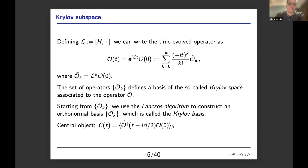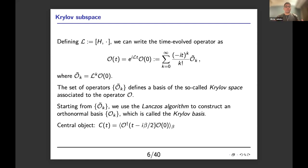In more abstract terms: first you define the Liouvillian operator L, and then write the time-evolved operator formally. Expanding the exponential, you can write this as a sum involving operators Õ_k, which define the so-called Krylov space associated to the operator O. Starting from this basis, which is in general not orthogonal, we use the Lanczos algorithm to construct an orthonormal basis — the Krylov basis. The central object in this algorithm is a two-point function C, defined at finite temperature. Beta here denotes the inverse of the temperature.